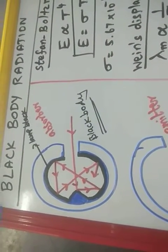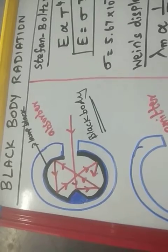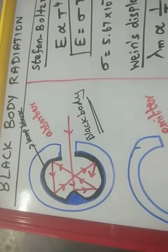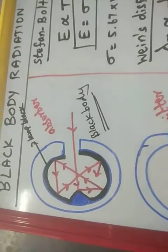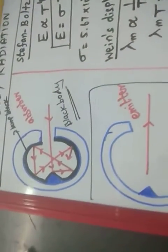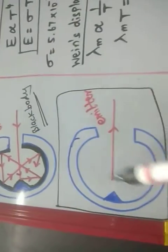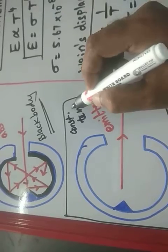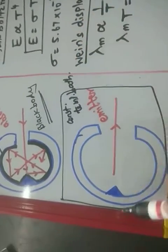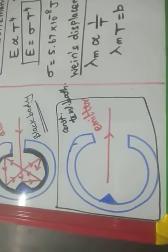A black body is one which neither reflects nor transmits, but absorbs the whole of the heat radiation incident on it. If you keep this black body in a constant temperature bath, whatever heat radiations are absorbed, everything will be emitted.